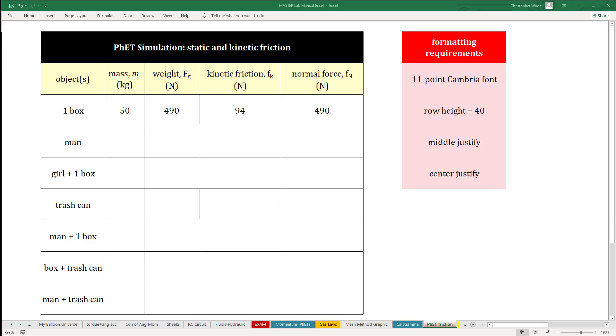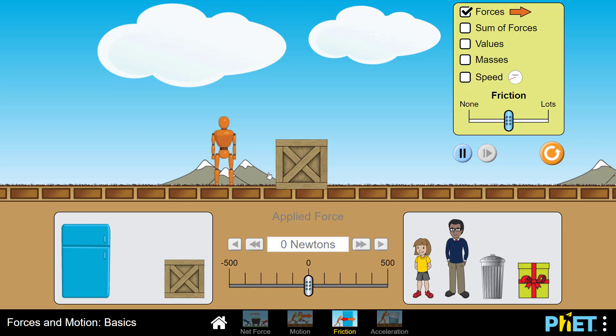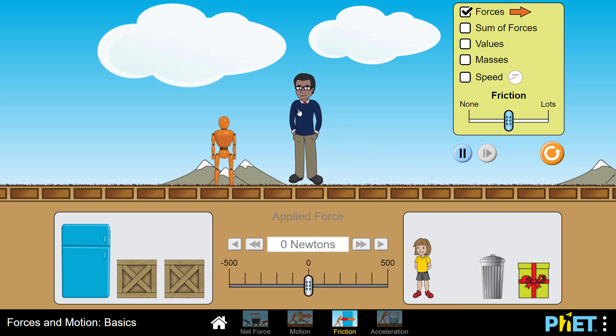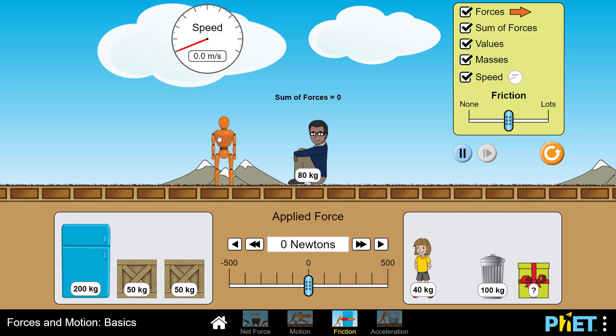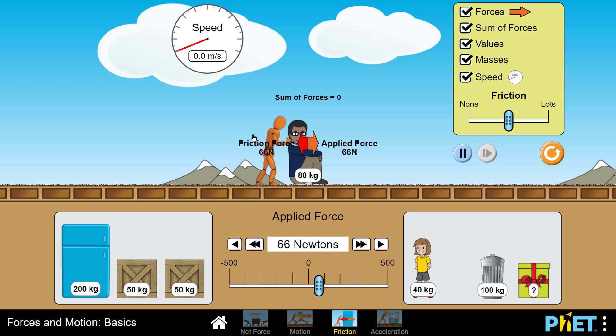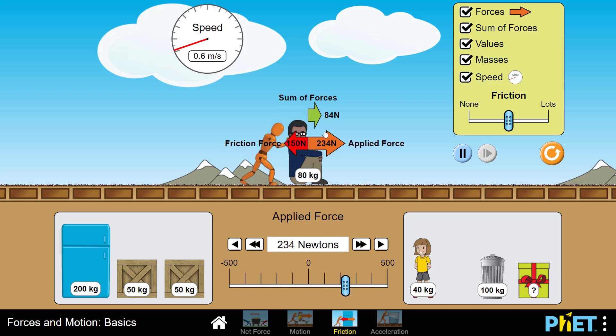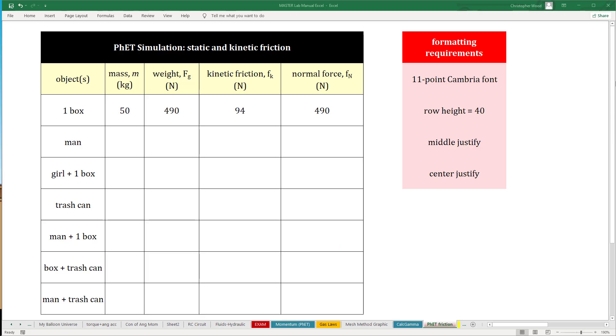The next trial is MAN. Click reset, put the box away, select the MAN. Now you just repeat the same procedure you used with the crate. Check all these boxes, and start doing some trial and error to see what force is needed to just start motion, and update the spreadsheet for this trial. You know the mass of the crate, you can compute the weight, you can read the kinetic friction from the simulation, and once again, the normal force is the same as the weight force.